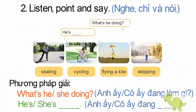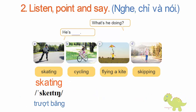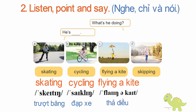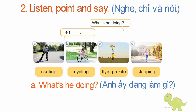Page 60, Lesson 2, Activity 2. Listen, point and say. A. Skating. B. Cycling. C. Flying a kite. D. Skipping. What's he doing? He's skating.